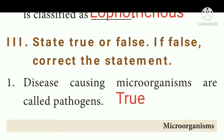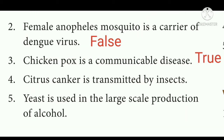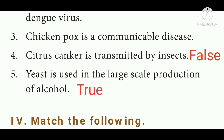Roman numeral 4, True or False. Question 1: Disease causing microorganisms are called pathogens. Answer: True. Question 2: Female Anopheles mosquito is a carrier of Dengue virus. Answer: False.